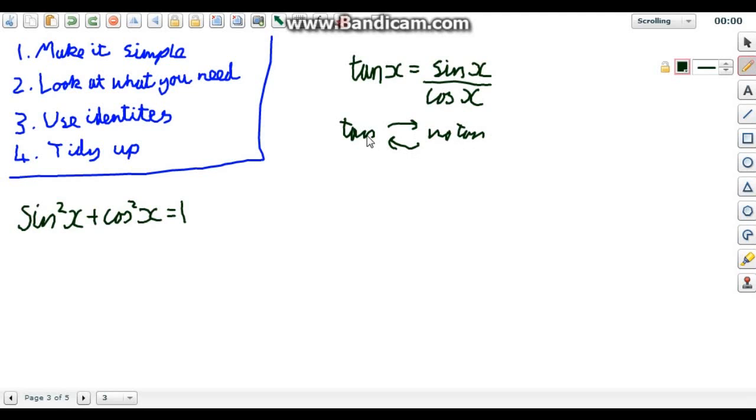So basically, if you've got tan and you don't want any, use this. Or if you don't have tan and you do want some, use this. They're the only two scenarios that you will use this identity. And that's if you want tan or if you want to get rid of tan.